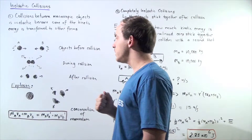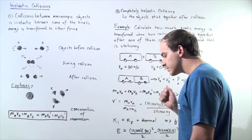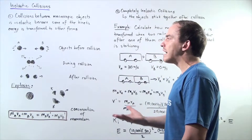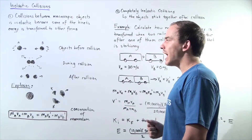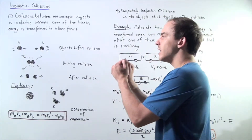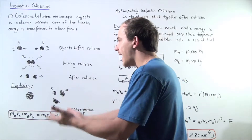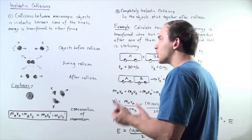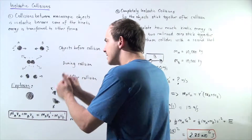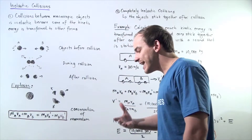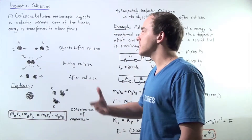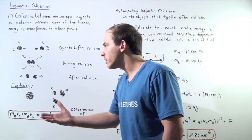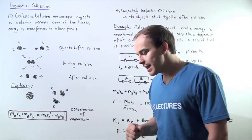For example, if we have two macroscopic objects A and B that are traveling with some velocities before they collide, they have kinetic energy. What will take place during our inelastic collision is some of that kinetic energy in the macroscopic movement of our two objects will transform into other forms of energy.